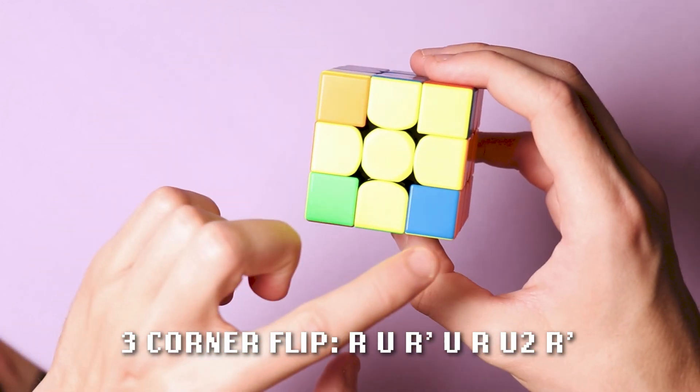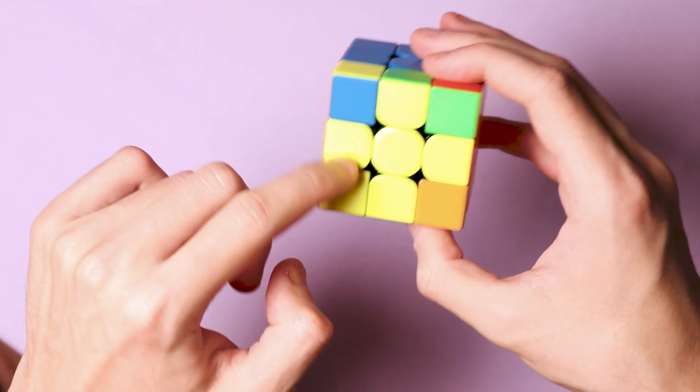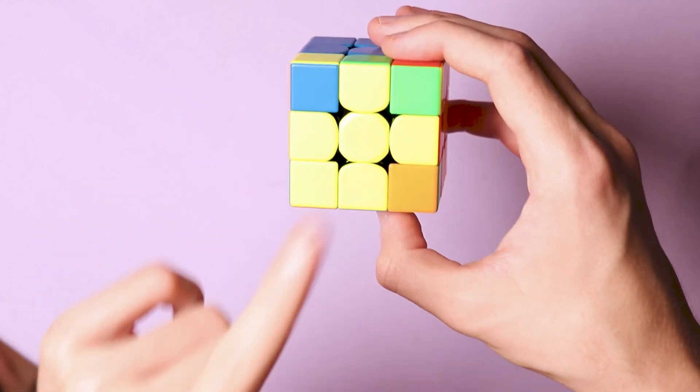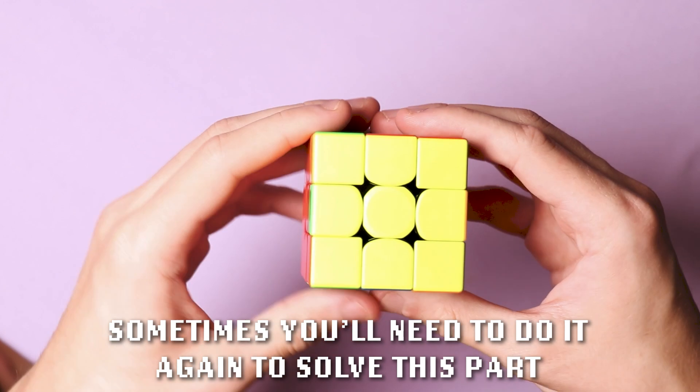Doing this actually flips three of the corners. You can flip corners until you achieve this position, which is the cross with one corner on the left. When you do this algorithm from here, you have solved the top part of the cube.